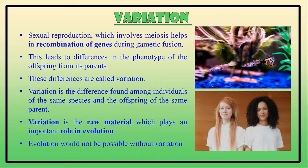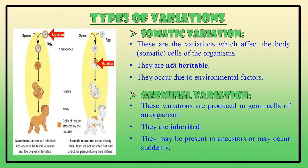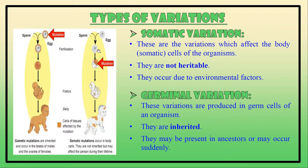Variation is the difference found among the individuals of the same species and the offspring of the same parent. Variation becomes the raw material for evolution — that means evolution would not be possible without variation. There are two types of variations: somatic variation and germinal variation. Somatic variations affect the body cells of the organism and they are not heritable, meaning they are not transmitted to the next generation, and they occur due to environmental factors.